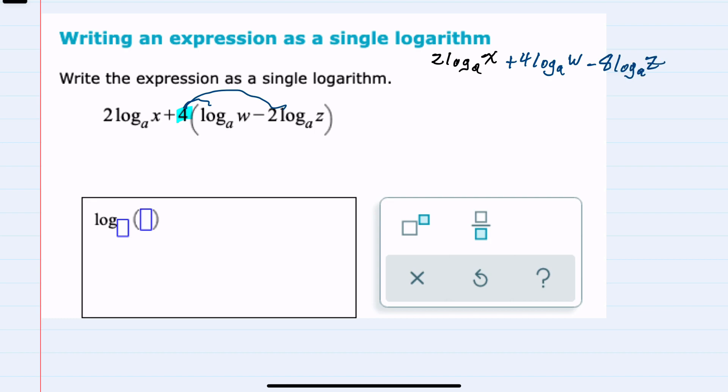From here, we can next simplify by moving these coefficients up to the exponents, giving us a log base a of x squared plus a log base a of w to the 4th, and then minus log base a of z to the 8th. So we have removed the parentheses and taken care of all those leading coefficients.